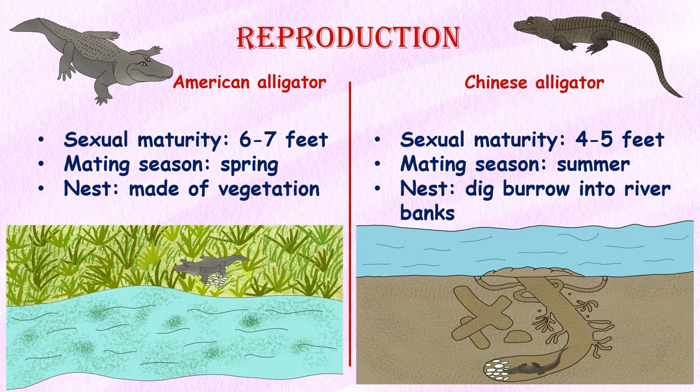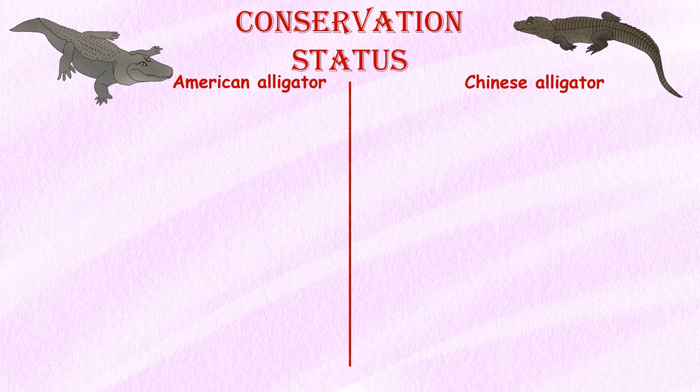Reproduction. American alligators reach sexual maturity at around 6 to 7 feet in length and mate during the spring. Females lay their eggs in a nest made of vegetation and defend the nest from predators. Chinese alligators reach sexual maturity at around 4 to 5 feet in length and mate during the summer. Females lay their eggs in burrows dug into river banks or soft soil.